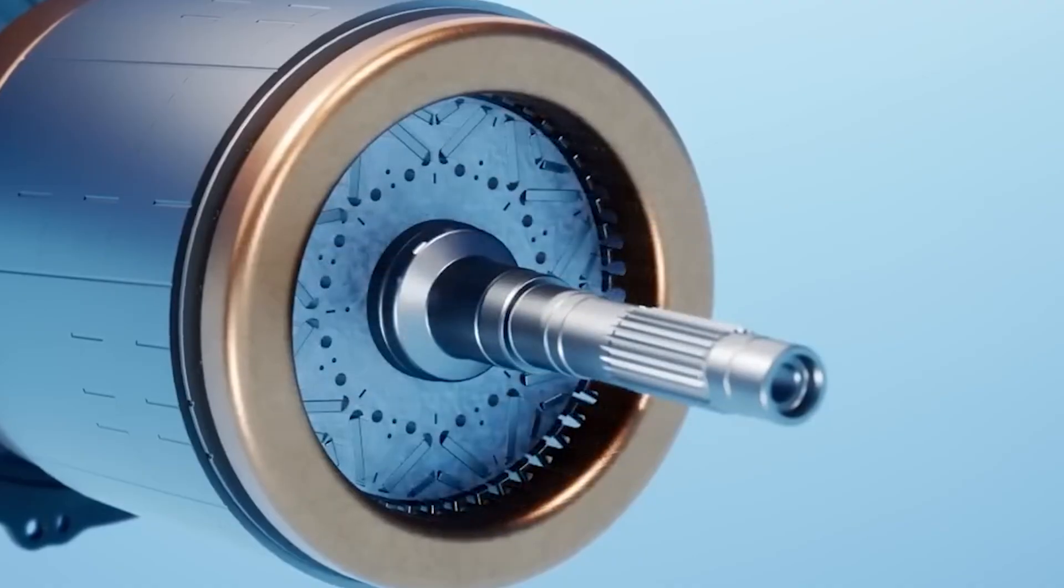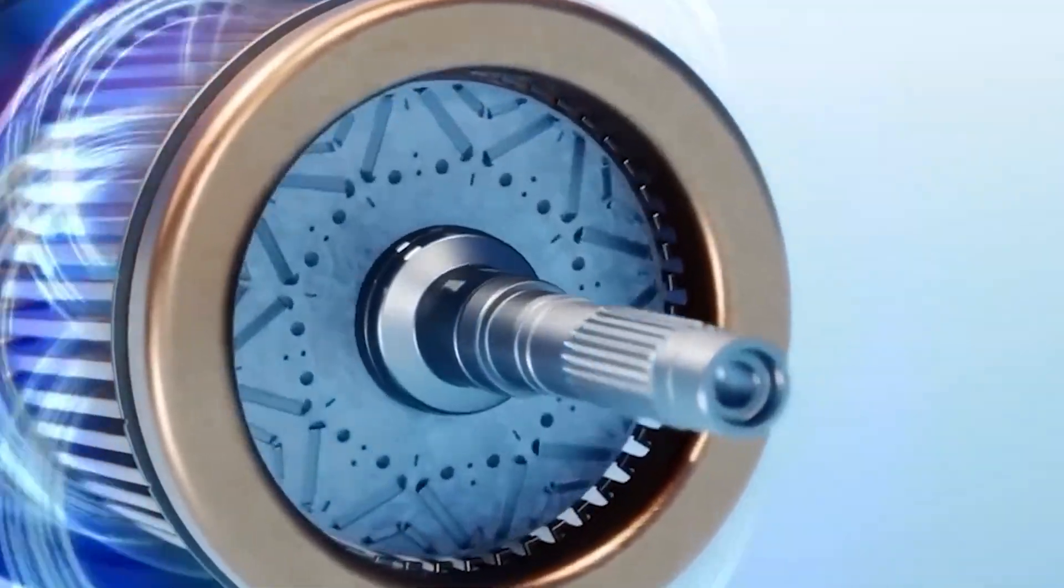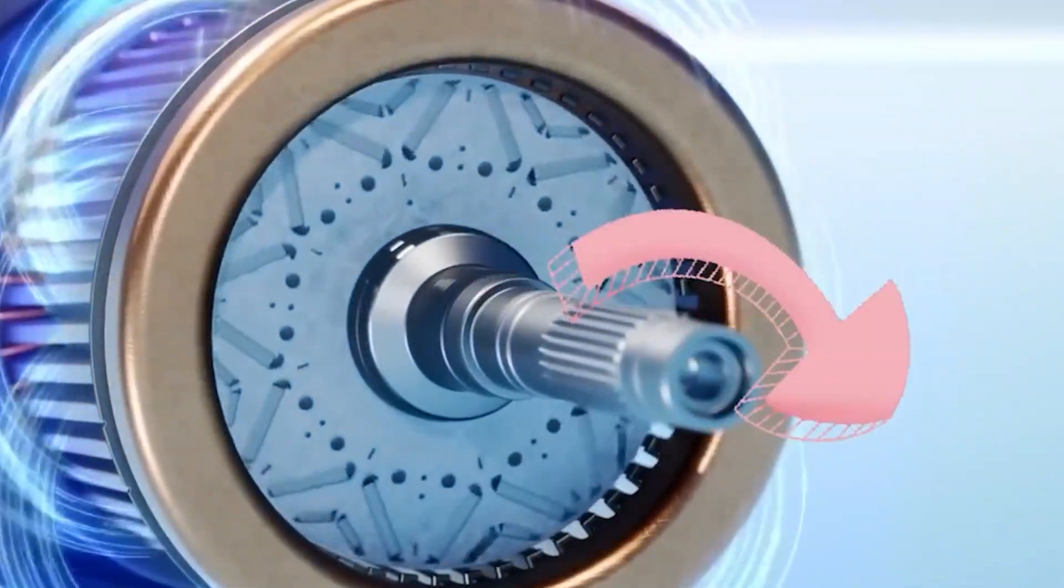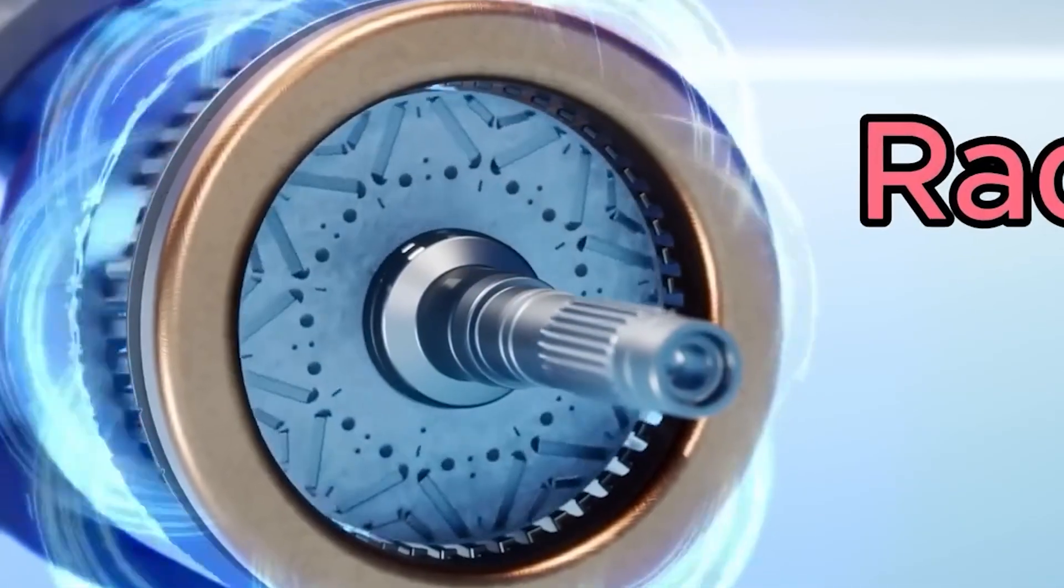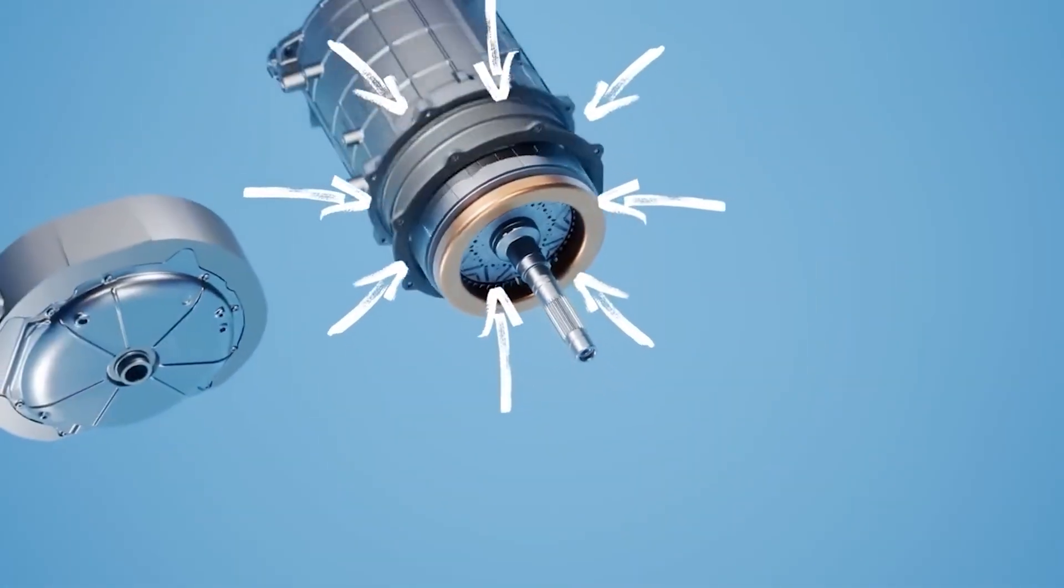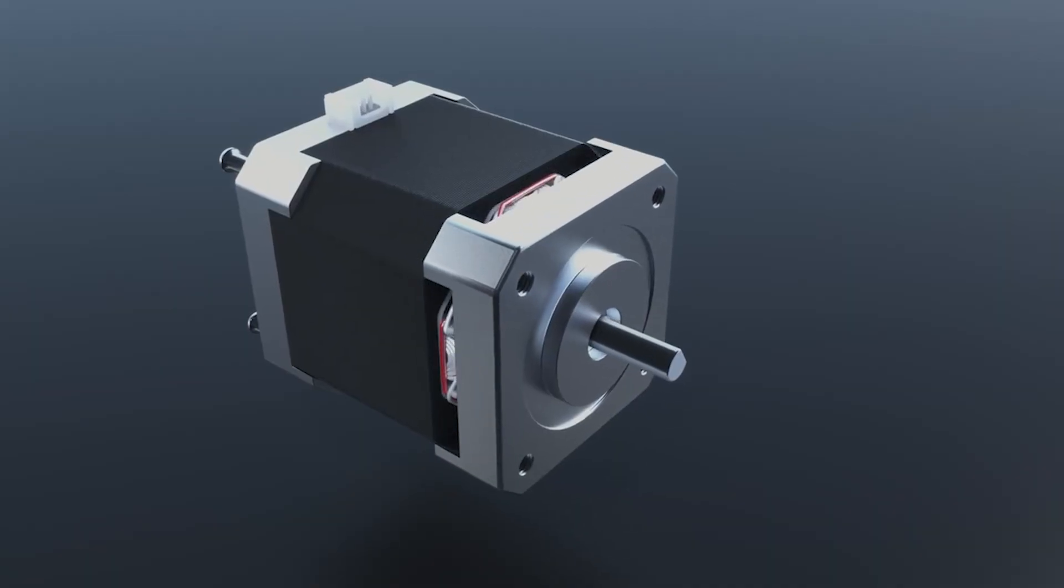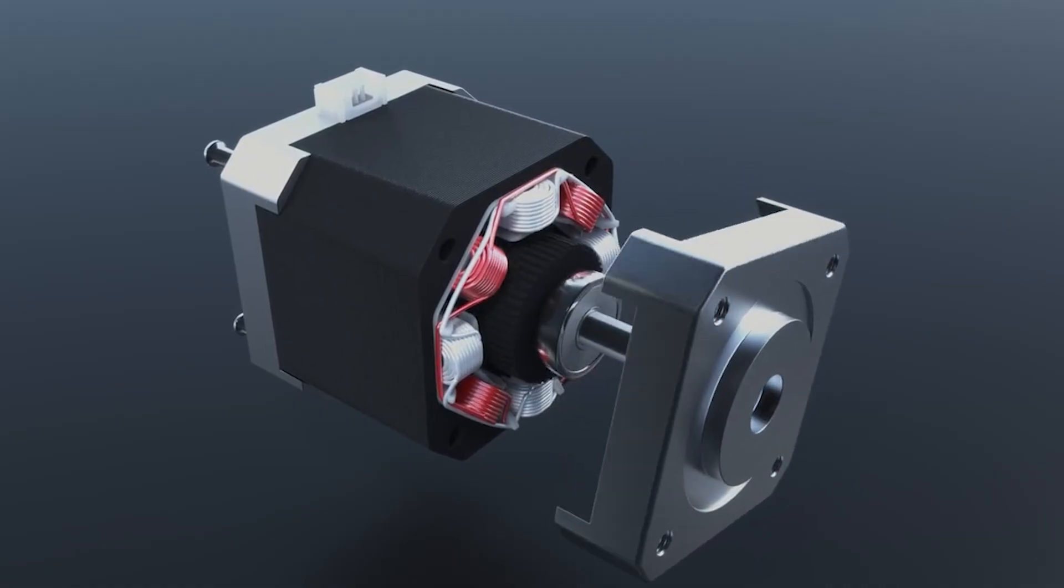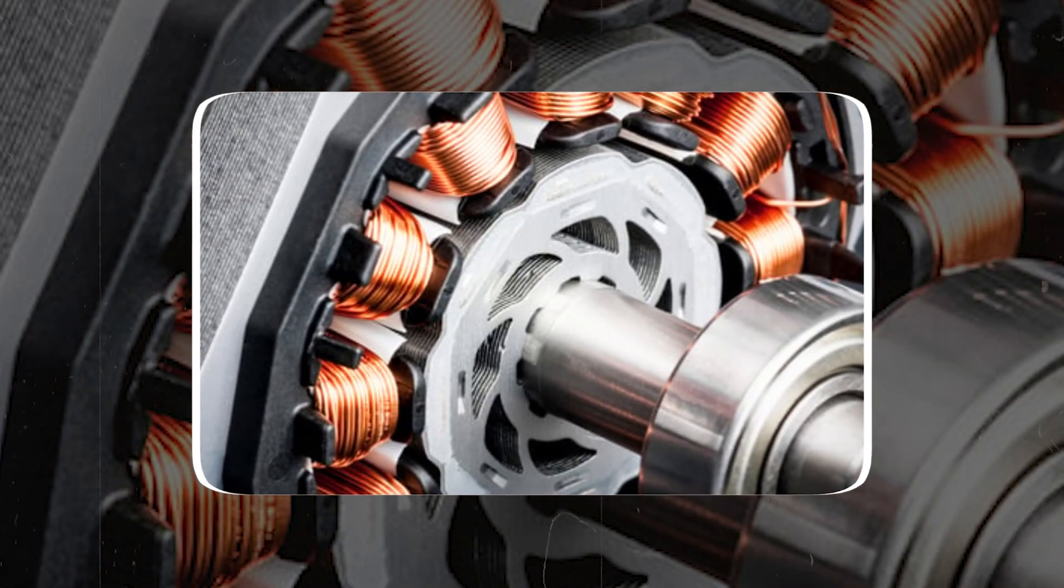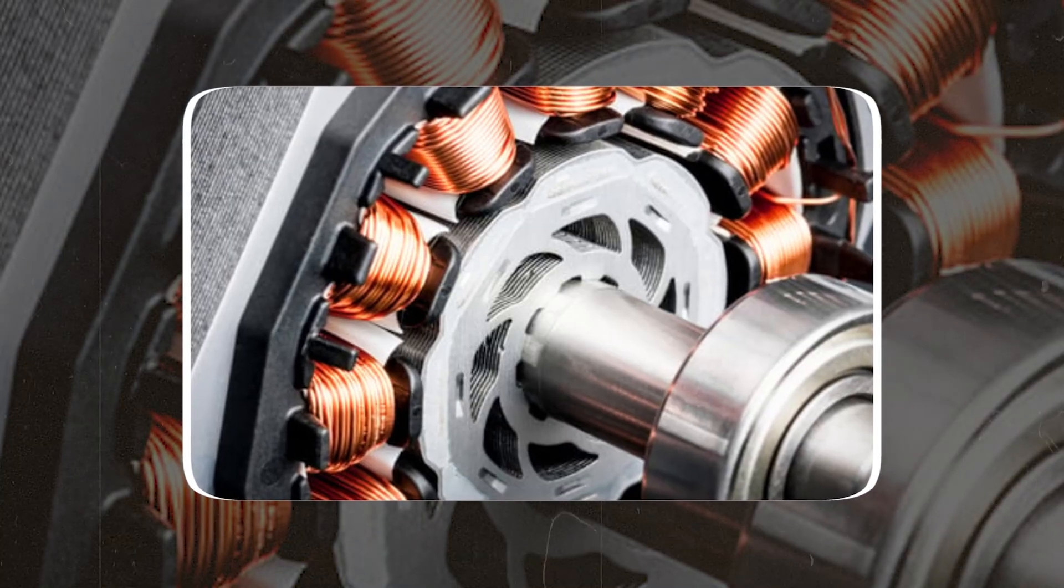When this current flows, it creates a rotating magnetic field that interacts with the magnets inside the rotor. This magnetic interaction causes the rotor to spin and deliver torque to the wheels. The forces produced move outward from the center, which is why the design is called Radial Flux. It is a proven and reliable architecture used in millions of electric vehicles.